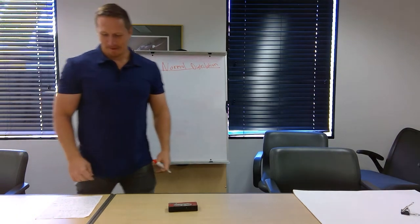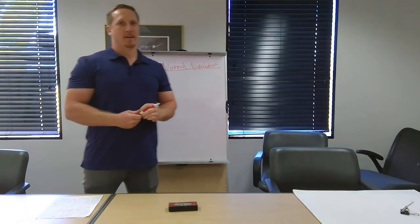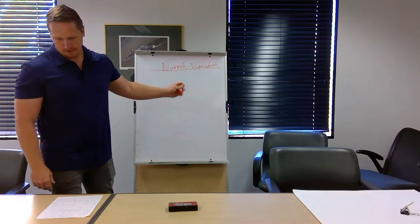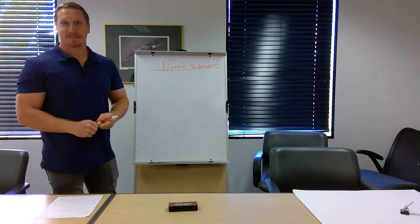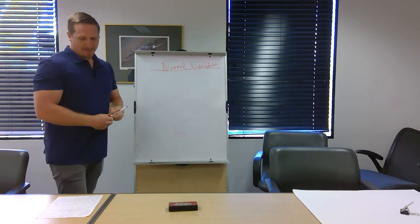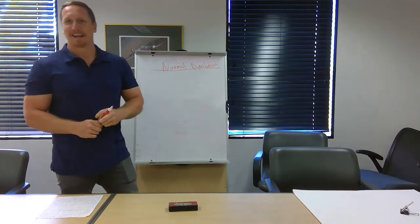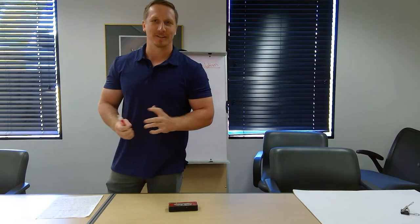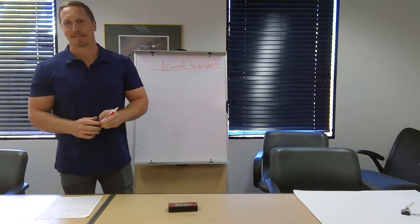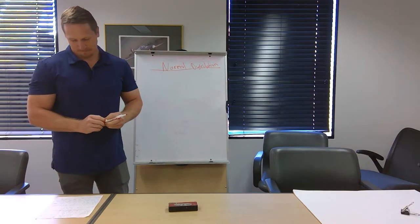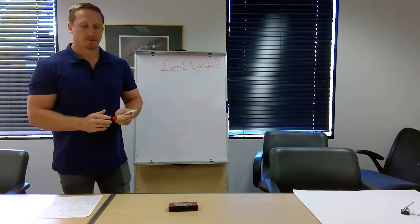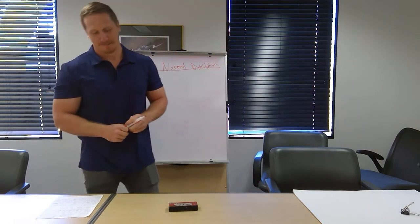Today we're going to learn about normal distributions, the normal probability distribution, also known as the density curve. This is important to know because every scientific research study that uses the scientific method at some point will use some sort of distribution to test the statistical significance of the results in their study.